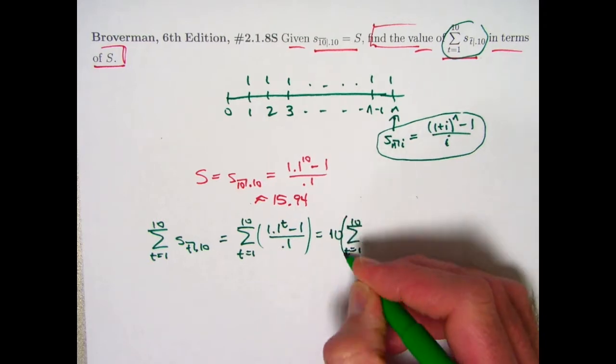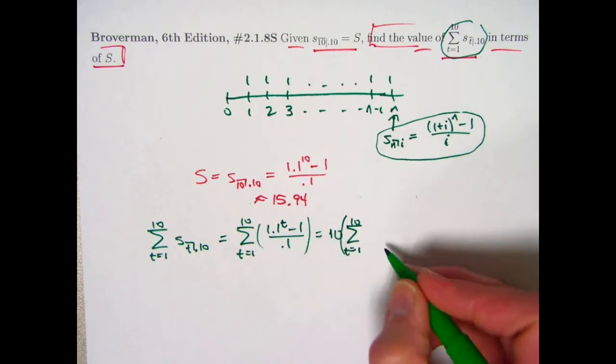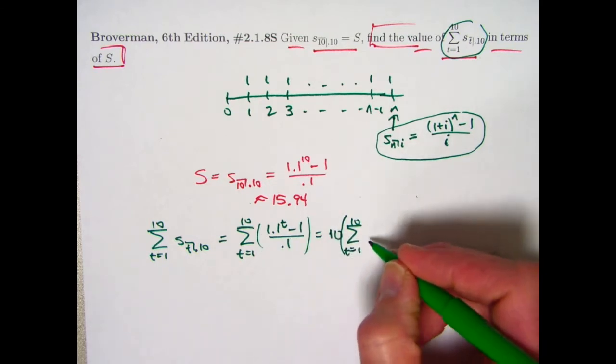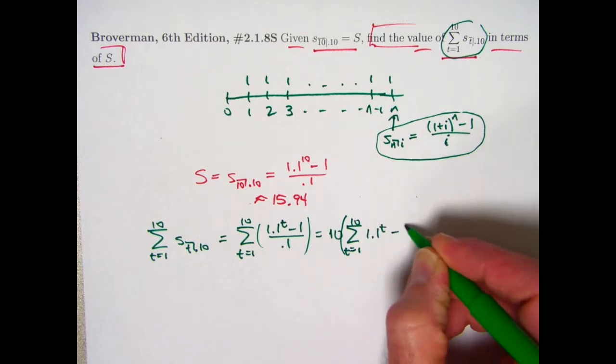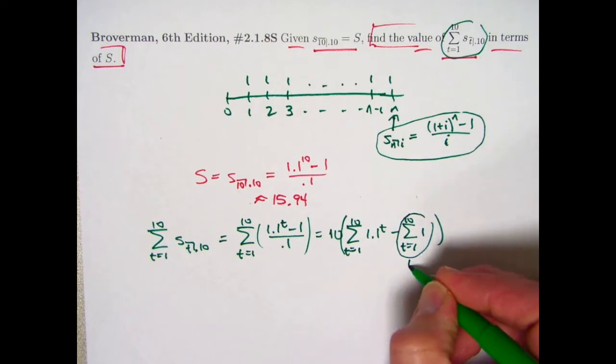What I'm left with is a sum of this difference. I can take the sum of the first thing minus the sum of the second thing. I can write the summation t goes from 1 to 10 of 1.1 to the t, minus summation t goes from 1 to 10 of 1. And that is just 10.